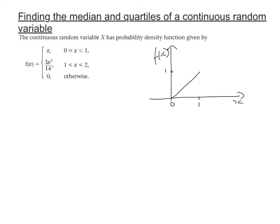Now the next bit looks like a quadratic and it's between 1 and 2. If we substitute 1 into this, it's going to have a height of 3 over 14. So 3 over 14 is the height there. And if we substitute 2 into this, we're going to get 12 over 14. So it's an increasing function between 1 and 2, and it's going to look something like that. Complete the PDF by drawing in the dots and then the plateaus either side to show that it's 0 otherwise.